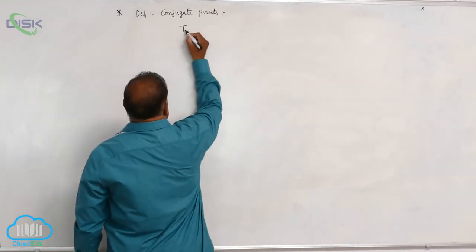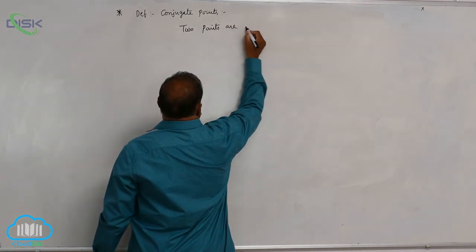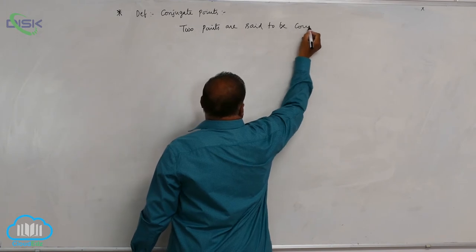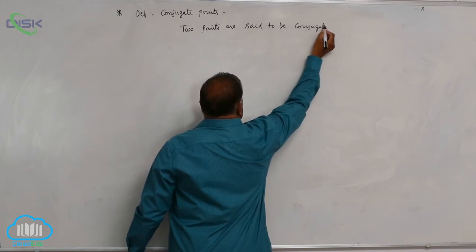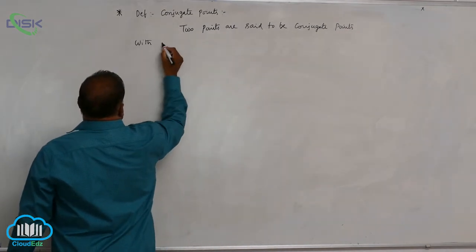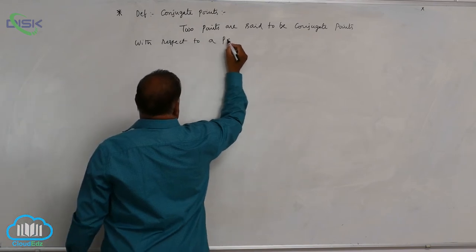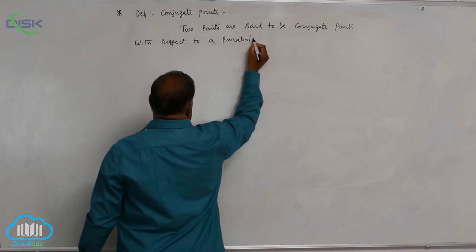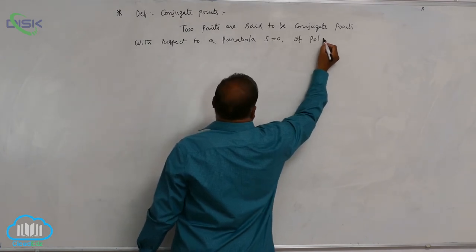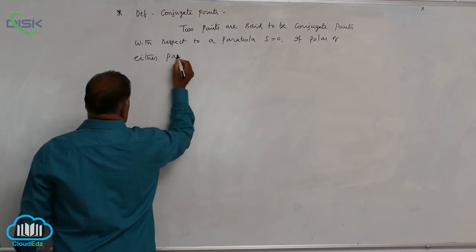We know that two points are said to be conjugate points with respect to a parabola S is equal to 0, if polar of either passes through the other.